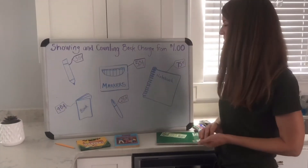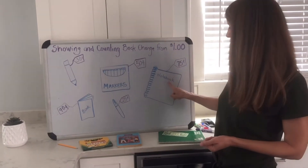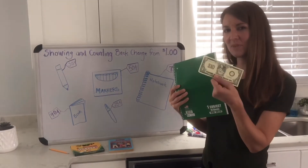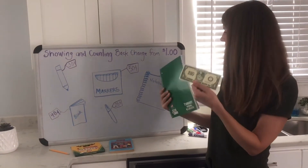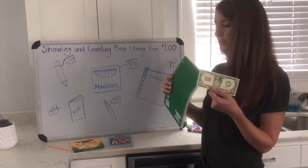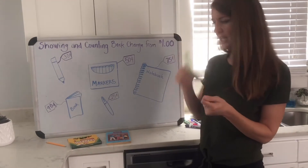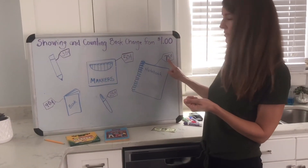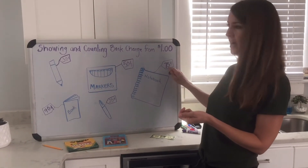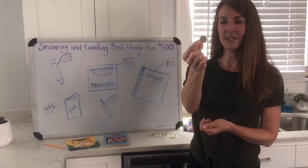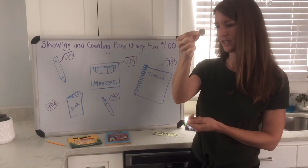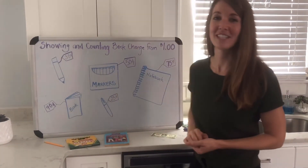Now for a notebook — someone came into my store and gave me a dollar to buy it. They have enough money, but I need to give them change. I take their dollar, start with 75 cents, and count up to a dollar: 75 — then 100. I give them one quarter back because 75 plus 25 is 100, so they get 25 cents change.